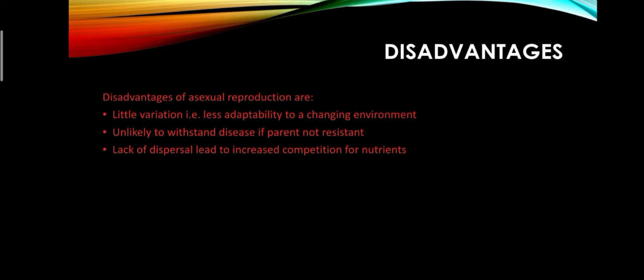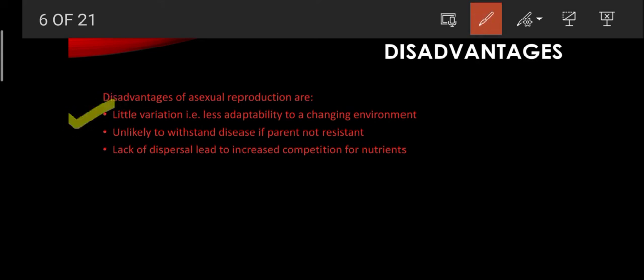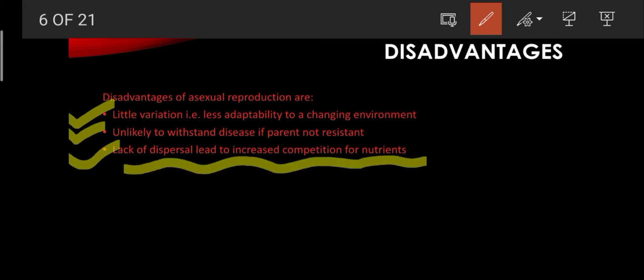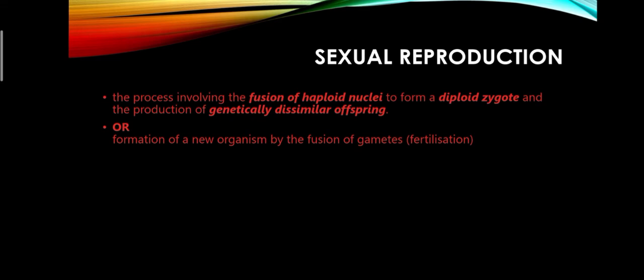The disadvantages of asexual reproduction include: little variation, meaning less adaptability to a change in the environment; second, if the parent is not resistant to a certain disease, offspring are unlikely to withstand that disease; and third, lack of dispersal leads to increased competition for nutrients.